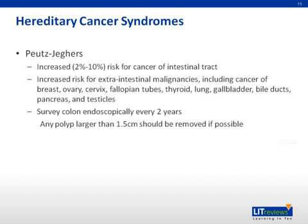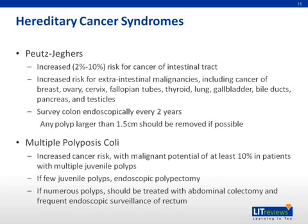Patients should also be screened periodically for malignancies of the breast, cervix, ovary, testicle, stomach, and pancreas. Multiple polyposis coli carries an increased cancer risk in afflicted individuals with a malignant potential of at least 10% in patients with multiple juvenile polyps. In patients with relatively few juvenile polyps, endoscopic polypectomy should be done. However, patients with numerous polyps should be treated with abdominal colectomy, ileorectal anastomosis, and frequent endoscopic surveillance of the rectum.